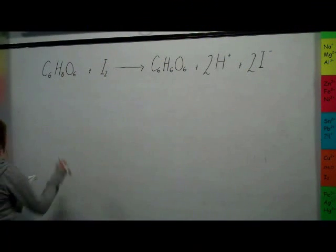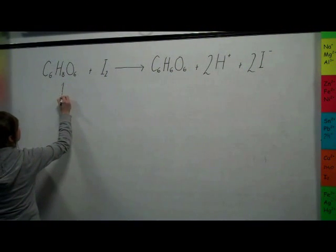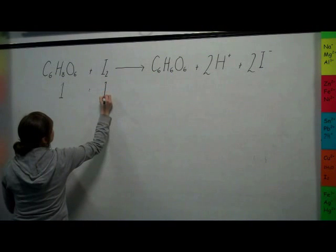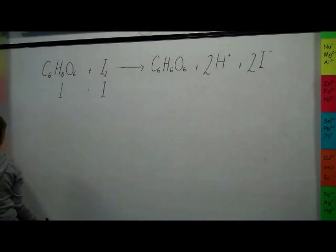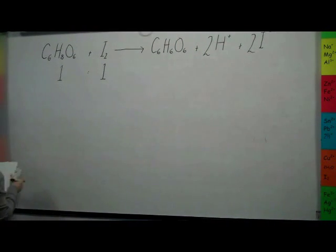From the redox calculation, we can establish that there is a 1 to 1 ratio between vitamin C and iodine. Therefore, if you can work out the total mass of iodine, you can work out the total mass of vitamin C.